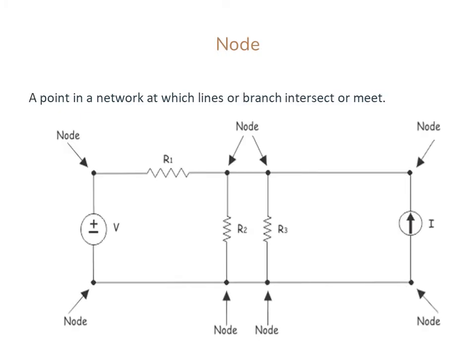Node: A node is a point in a network at which lines or branches intersect or meet.